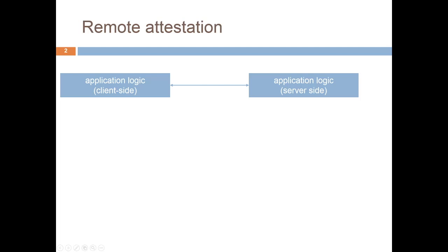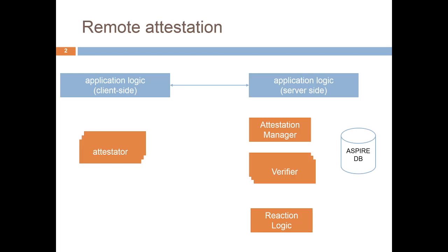Let's imagine we have an application. In the general case, there would be client-side and server-side components that communicate through the network. Remote attestation aims at detecting tampered applications by asking it to provide evidence of correctness — that is, the attestation.